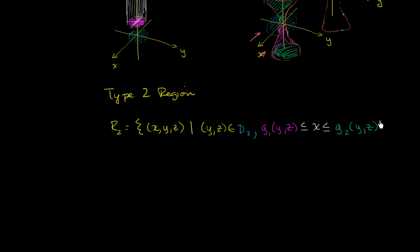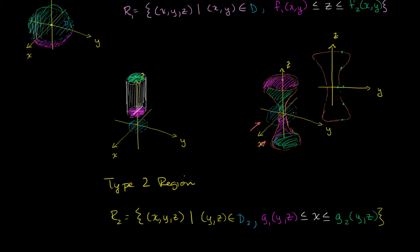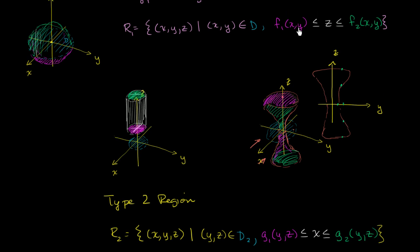You'll immediately see a very similar way of thinking about it, but instead of having z vary between two functions of x and y as we had in a type 1 region, we now have x varying between two functions of y and z.